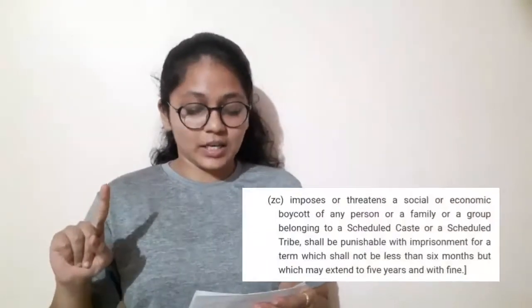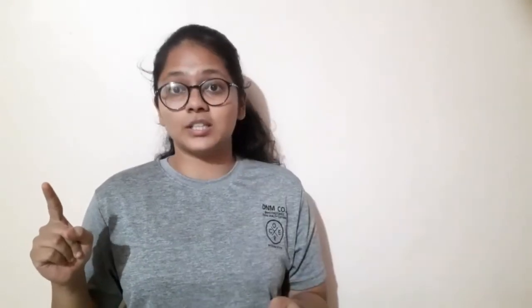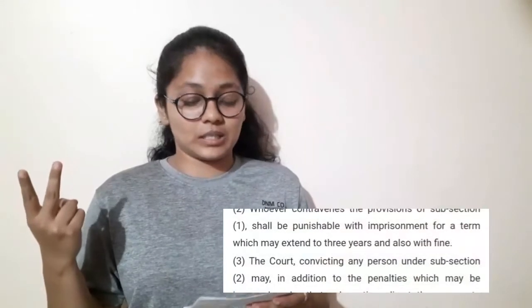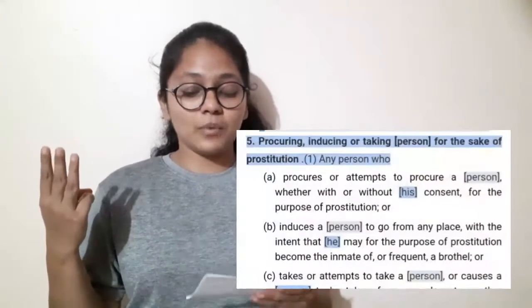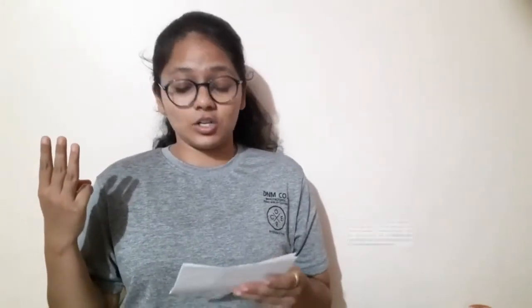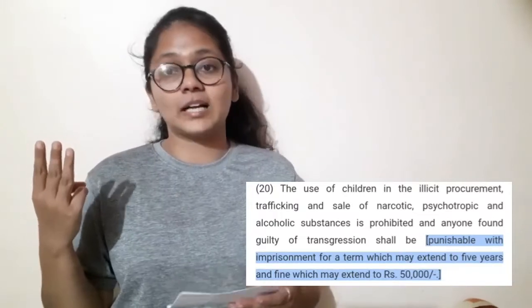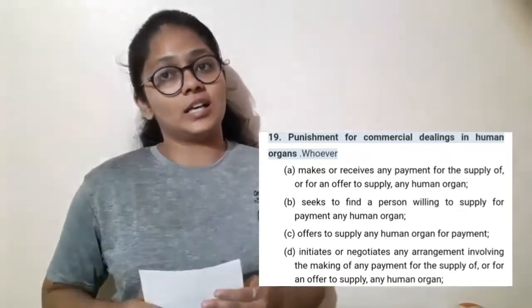There are also various statutes which have particular sections regarding human trafficking and its punishment to criminals. For example, Section 3Z of the Scheduled Castes and Scheduled Tribes Prevention of Atrocities Act 1989, Section 9 of the Bonded Labour System Abolition Act 1976, Section 5 of the Immoral Traffic Prevention Act 1956, Section 13 of the Goa Children's Act 2003, and Section 19 of the Transplantation of Human Organs and Tissues Act 1994.